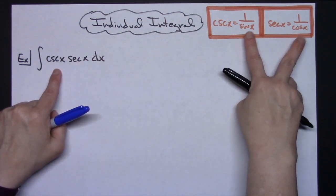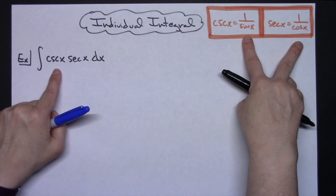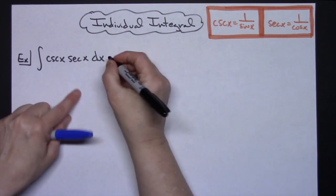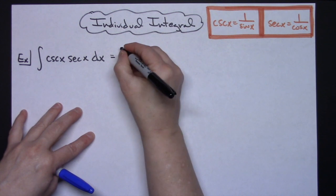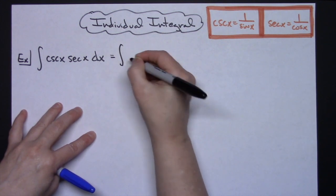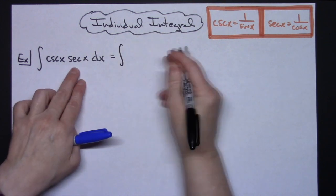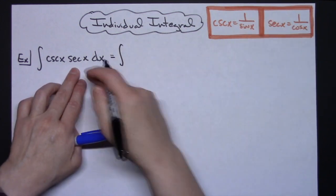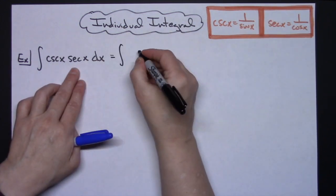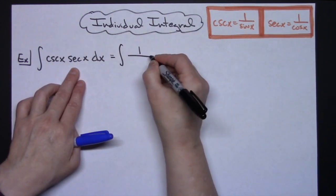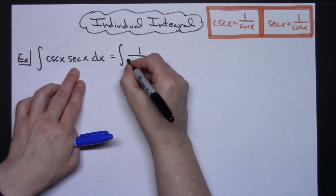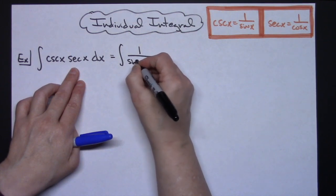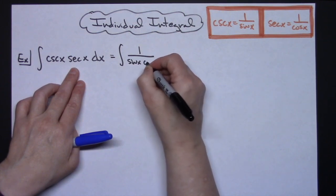I know both cosecant and secant have reciprocal identities of 1 over sine and 1 over cosine, so that's the direction I'm going to go first. We're going to rewrite and make it 1 over sine x cosine x.